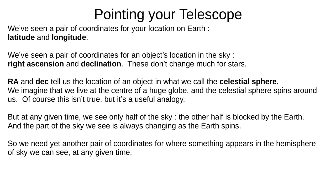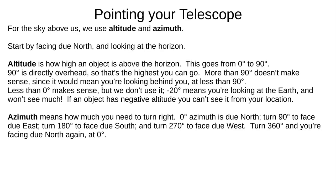Now that we can describe where we are on the Earth and where a star is in the sky, we can talk about where stars appear in the sky from our location — this is where you would point your telescope or your eyes. We need another pair of coordinates, because the sky is always changing as we move about on the Earth's surface and as the Earth spins. We start by pointing our telescope due north at the horizon.